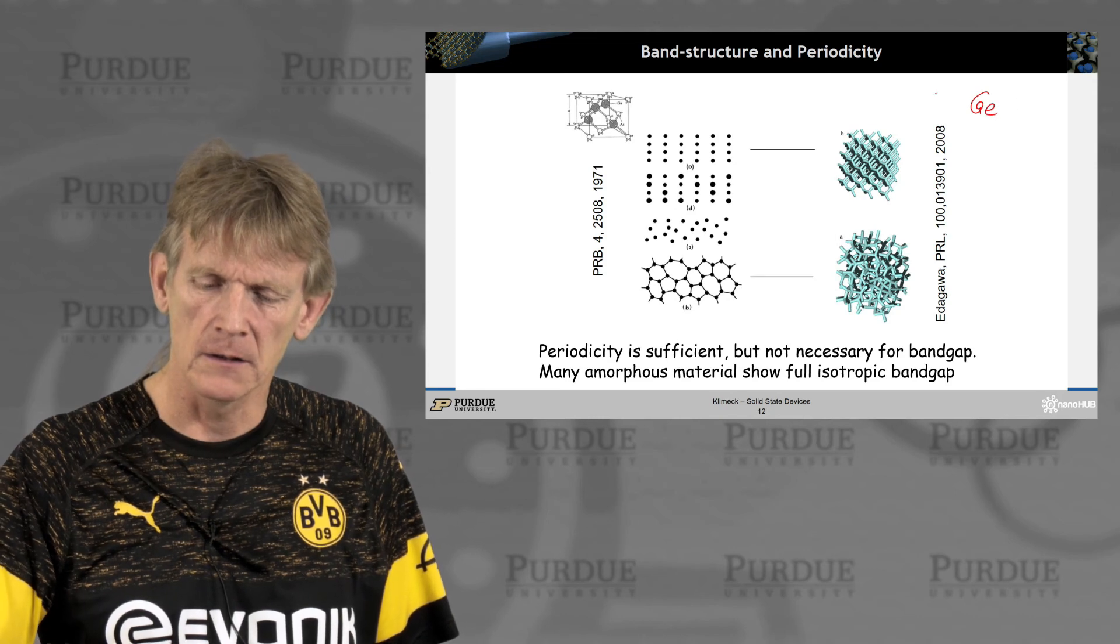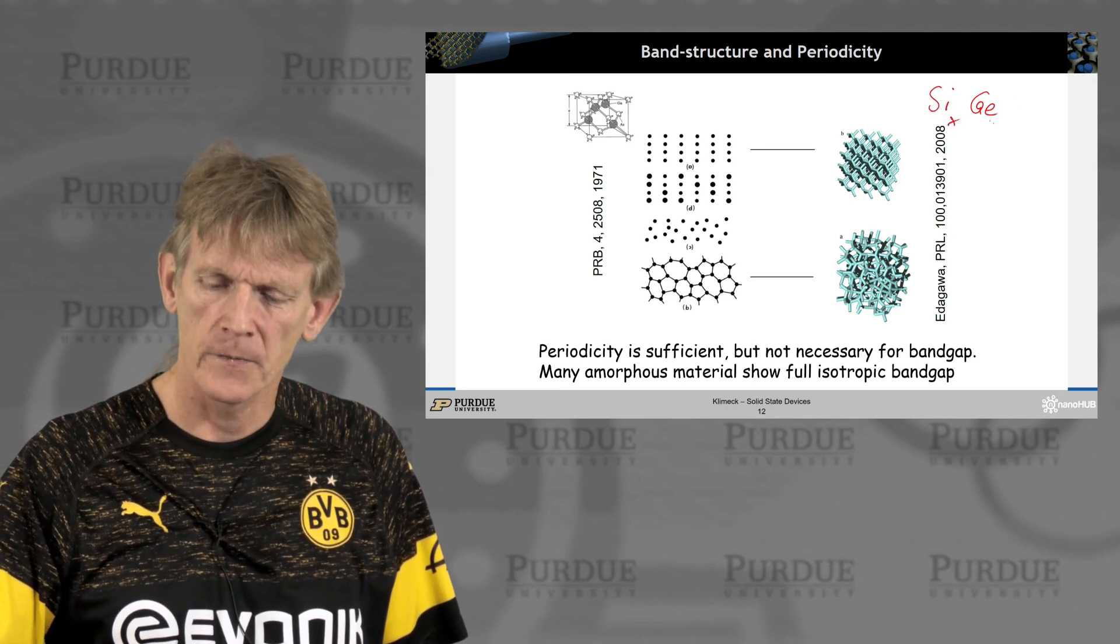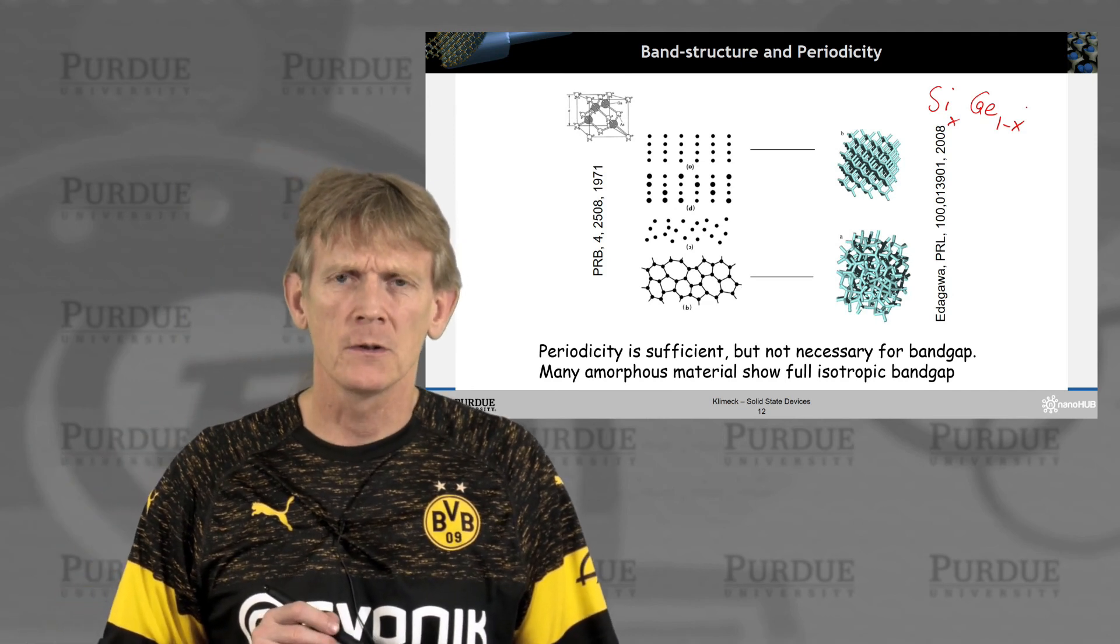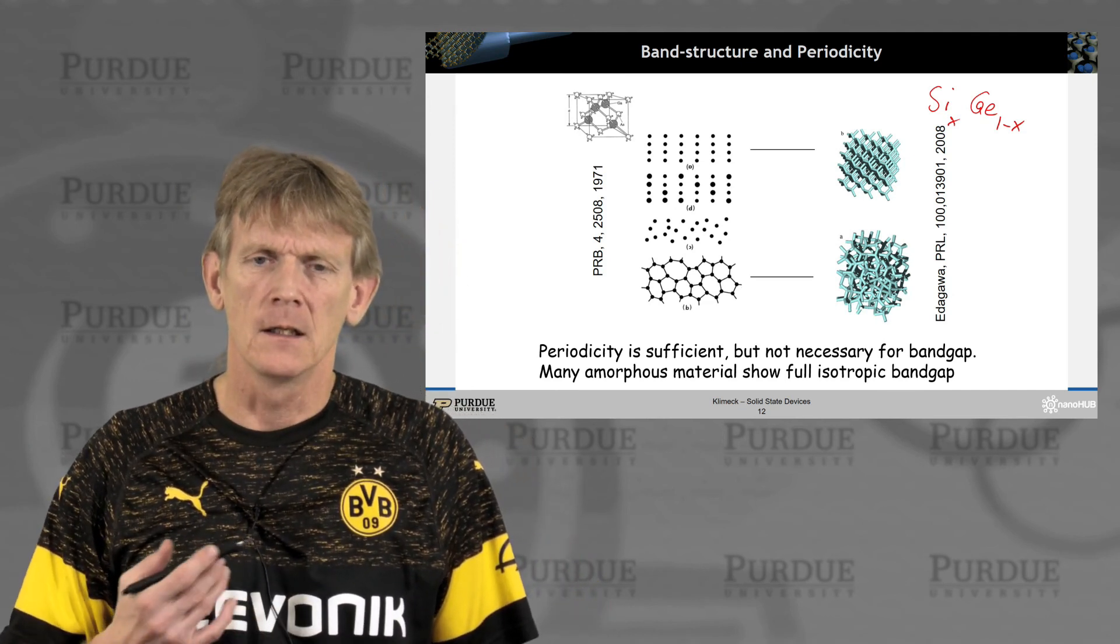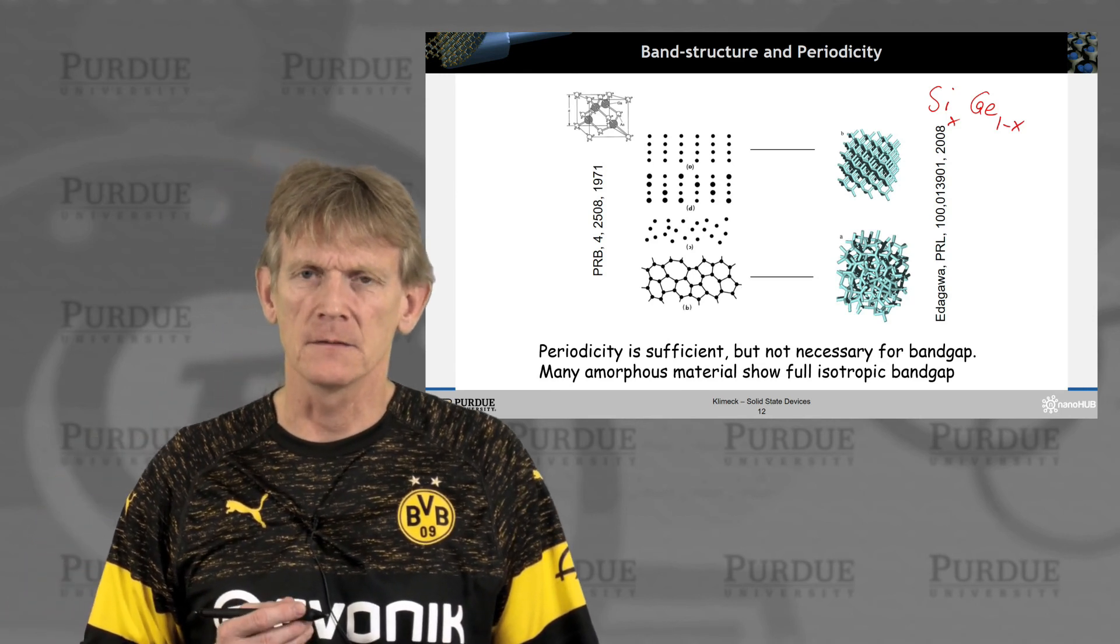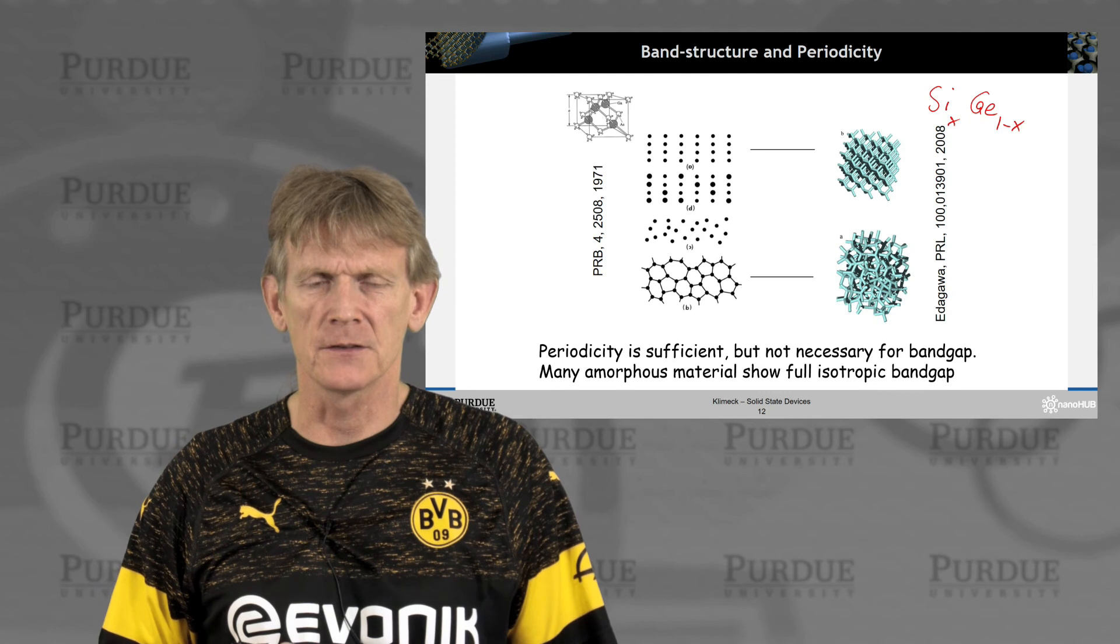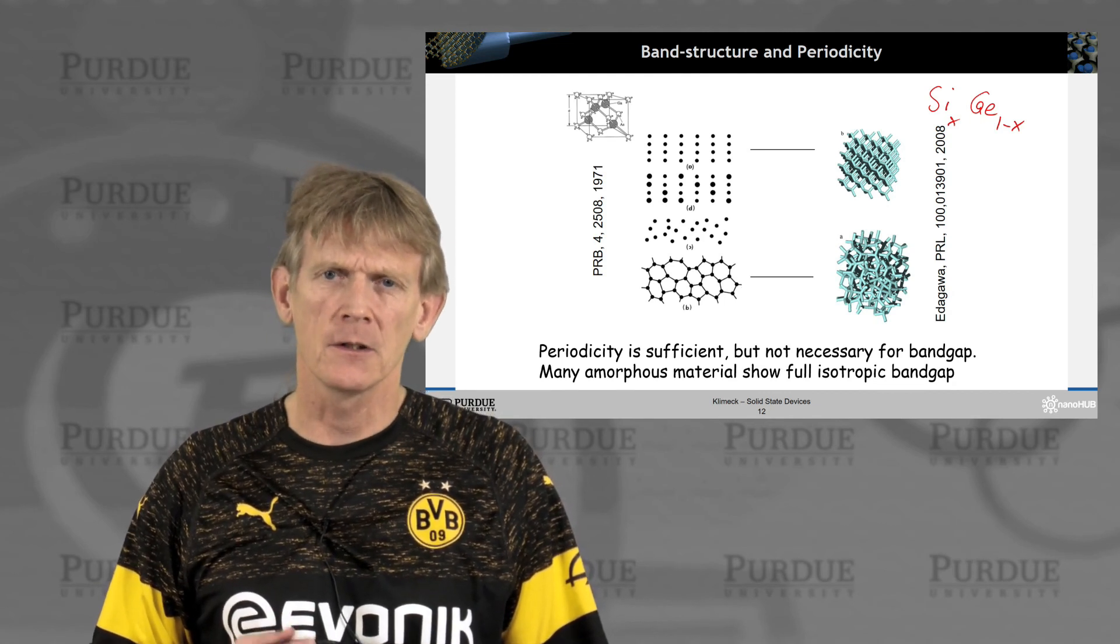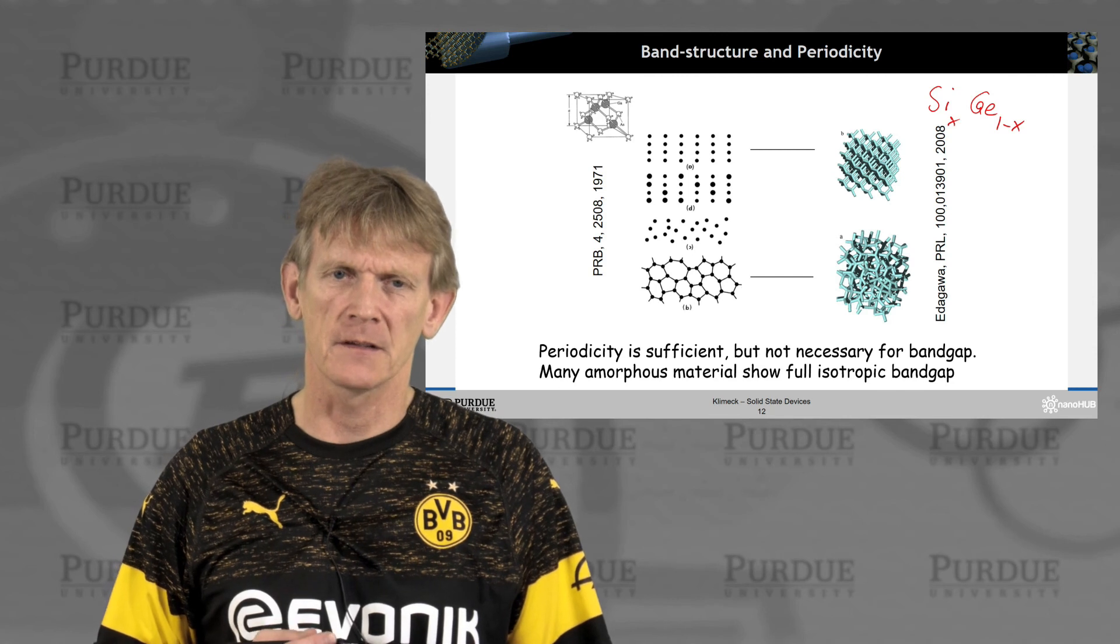And early on in the course, I mentioned silicon germanium, which is a compound. And I had shown a picture where you saw a random alloy. And we know that the silicon germanium as a material is a random alloy. It doesn't have perfect long-range order, but we know it has a bandgap. It has an effective mass, etc.